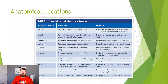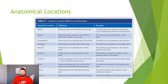Contralateral means positioned on the opposite side of the body — so your right foot is contralateral to your left hand. Ipsilateral means positioned on the same side of the body — your right foot is ipsilateral to your right hand. Those are two other terms you'll commonly see or hear people use.